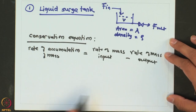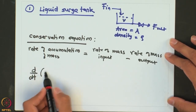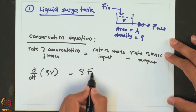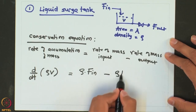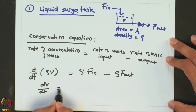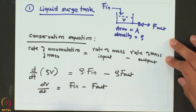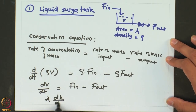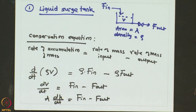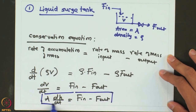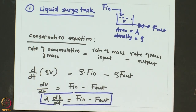The rate of accumulation of mass is the time derivative of mass, which is rho times V, equal to rho times F_in minus rho times F_out. Assuming density is constant, we can write dV/dt = F_in − F_out. Converting volume to height gives A·dh/dt = F_in − F_out. This is our first principle dynamic model of the surge tank.